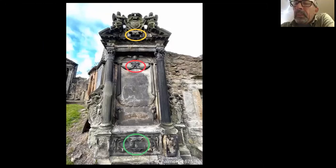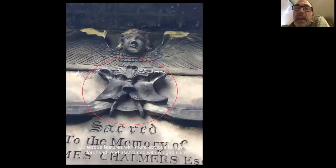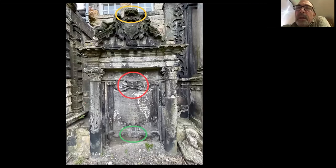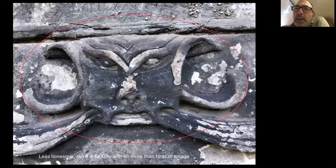Going across the other side of the graveyard, there's another Milne monument, this one to Chalmers in 1675. Very similar layout. We have that lioness face with foliage, clearly with leaves growing out of the bridge of the nose. Then the Spence Monument from the same year, 1675, again by Robert Milne - a similar format but a slightly lower budget memorial and smaller in scale. We have the same distinct faces appearing top, middle and bottom. The middle one is not quite so lionesque but clearly beastly with slight hints of foliage.